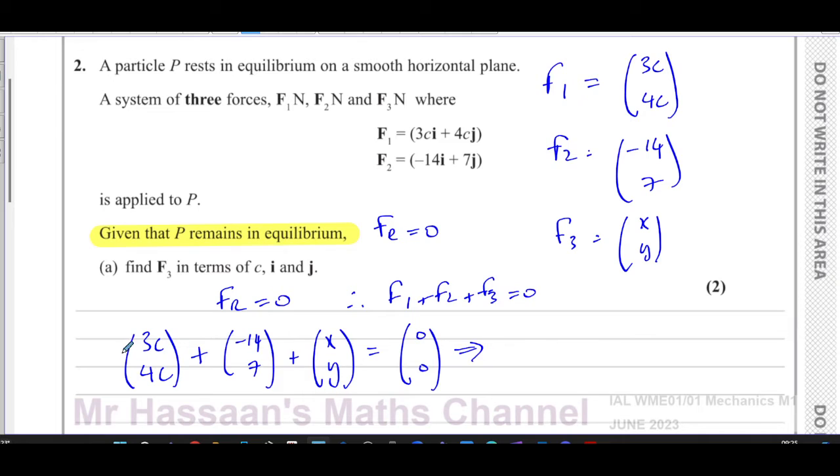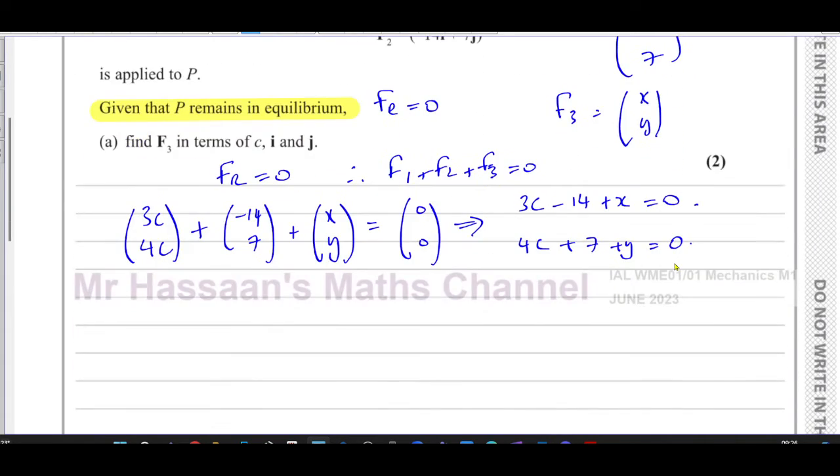From this, I can formulate an equation for i, which is 3c minus 14 plus x equals zero. And for j, I can say 4c plus 7 plus y equals zero. In fact, I can do it in a better way. I'll just call F3, F3. It's probably easier to do it this way. Just call this F3.